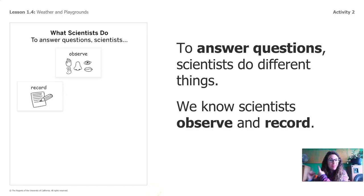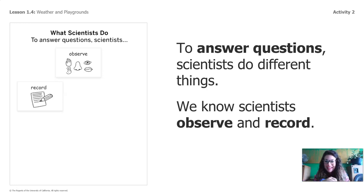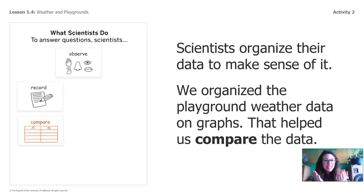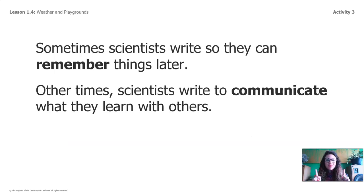Do you remember this chart about what scientists do? Scientists observe with their five senses and record data from investigations. They also organize their data to make sense of it — we used graphs to organize our data so we could see it clearly. Comparing is something else that scientists do; it means to look and see what is the same and what is different about data.